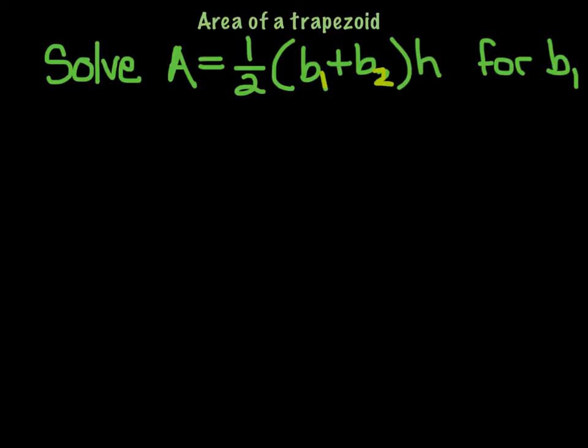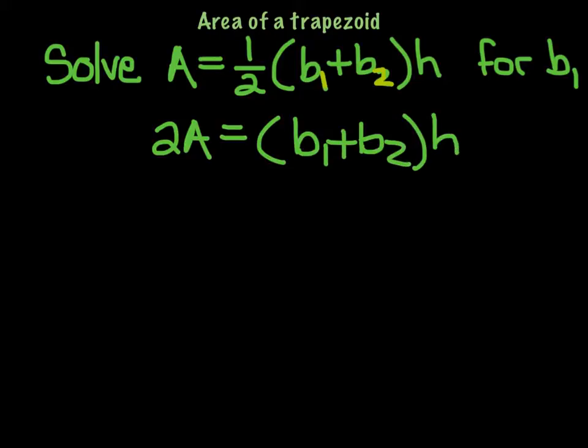So what we're going to do first is we're going to get rid of the one-half just like we did before. So we can make it 2A equals b1 plus b2 all times h. And so since we're working our order of operations backwards, the next thing we need to get rid of is this h. And the way you would do that is to divide both sides by h so that they cancel over here. So now I have 2A over h equals b1 plus b2.